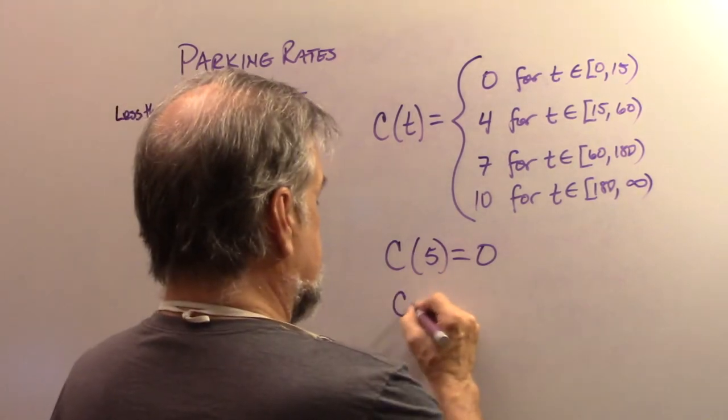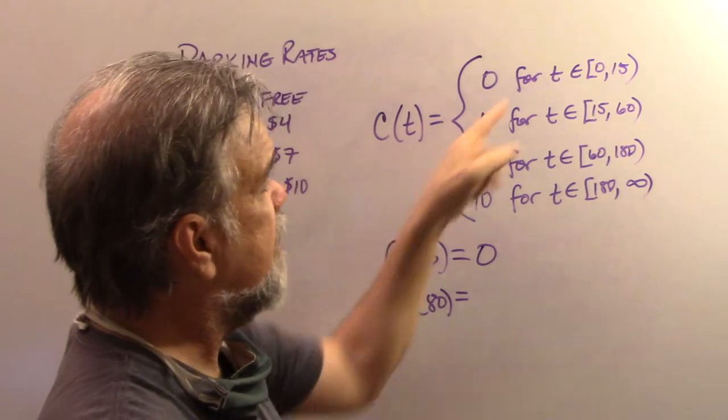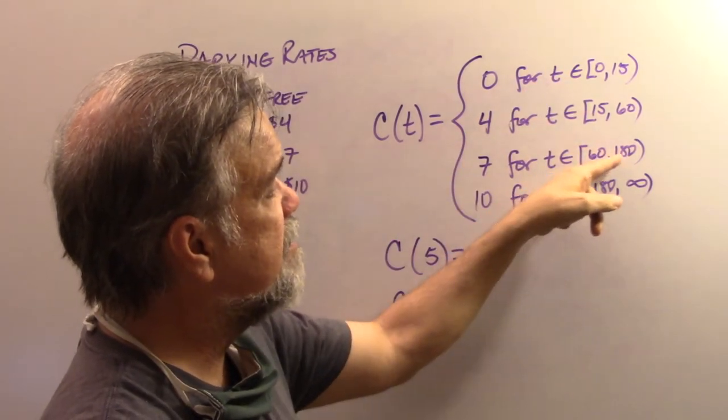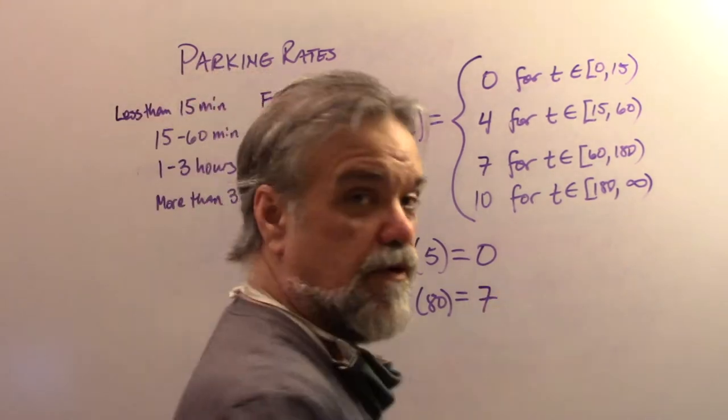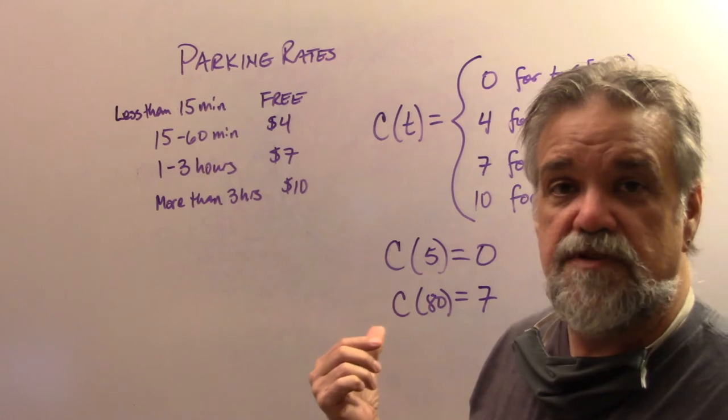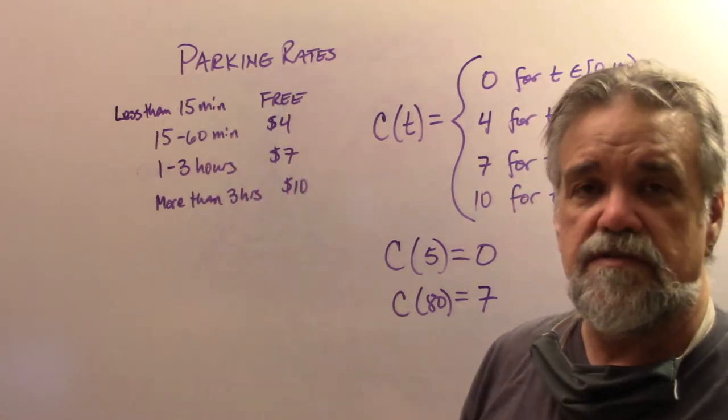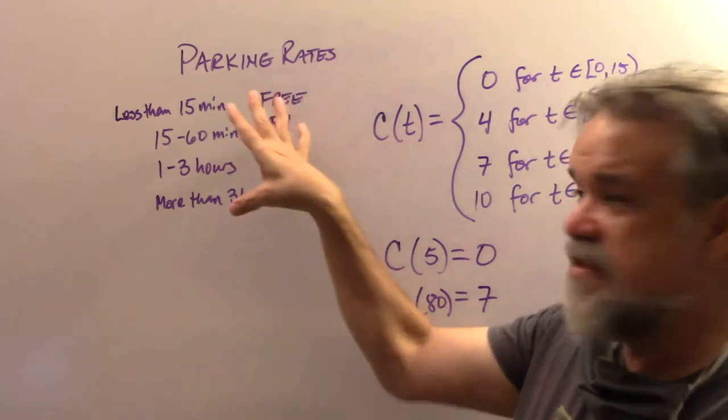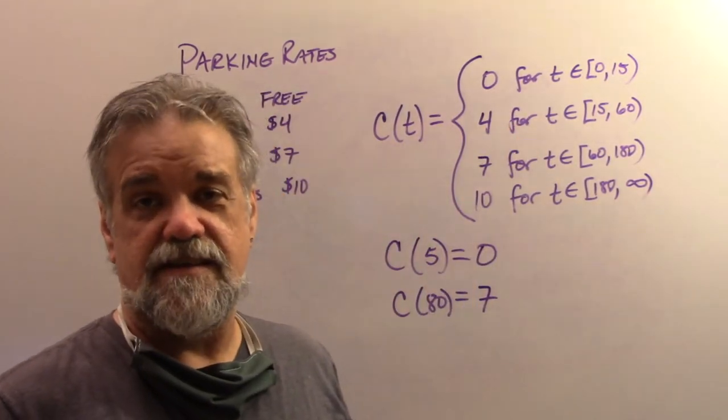What about C of 80? Well, let's see 80 falls in this interval right here between 60 and 180. So it's going to be seven. What does that mean? It means to park for 80 minutes, which is an hour and 20 minutes. It's going to be in there and it's going to cost me $7. So this here and this here say exactly the same thing.